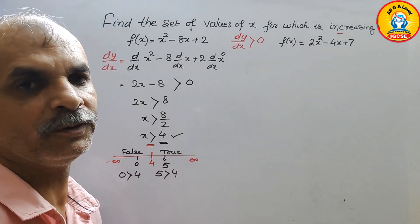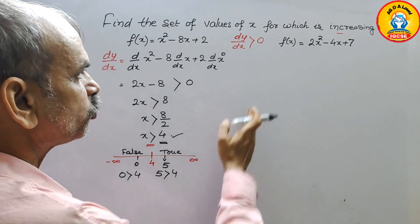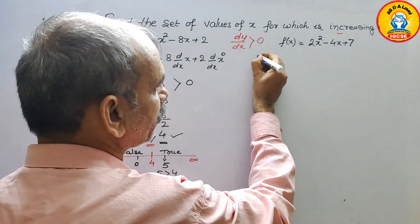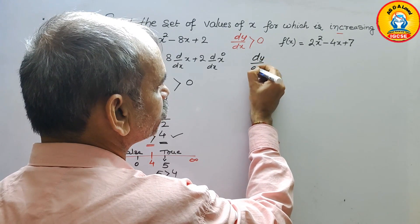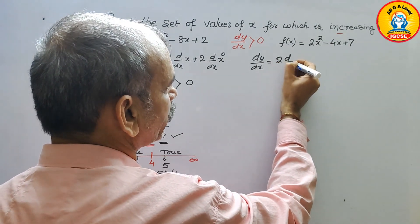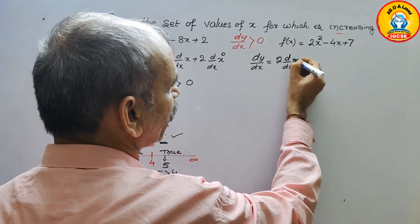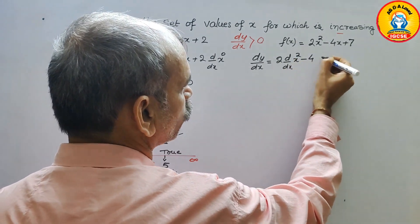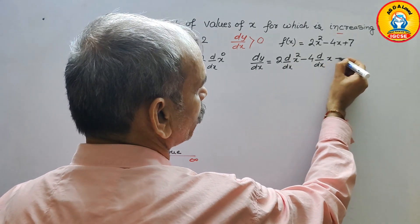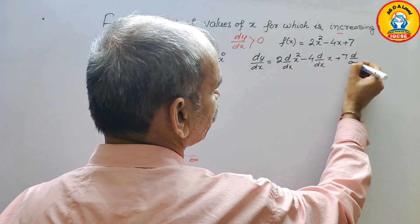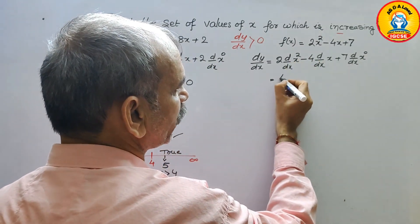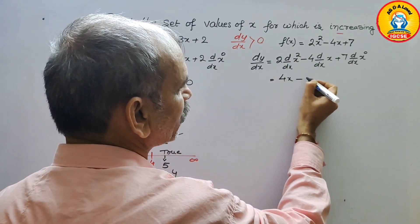Now for the second function, f(x) = 2x² - 4x + 7. We differentiate: dy/dx = 2 times d/dx of x² minus 4 times d/dx of x plus 7 times d/dx of x⁰. Differentiating gives 4x - 4.